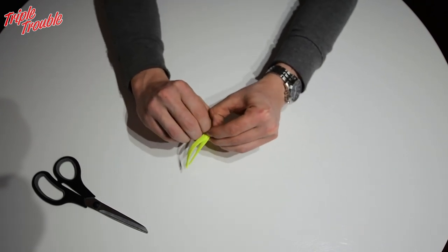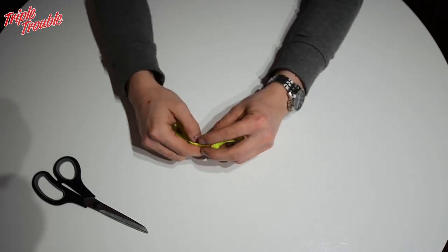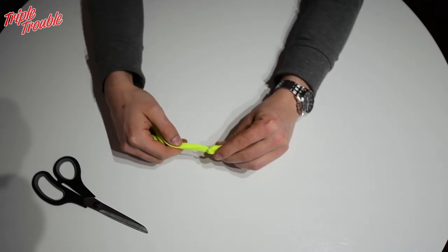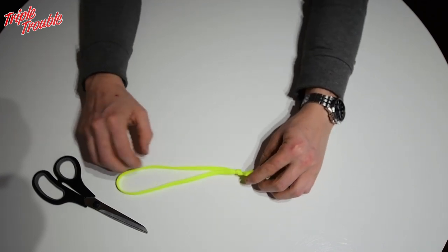If you want to change the size of your sling, simply remove the knot and put it somewhere else. If you're happy with the size of your sling, you can now pull the knot very tight.